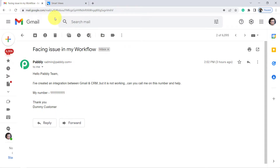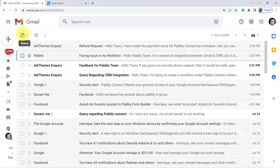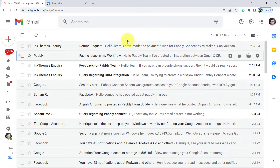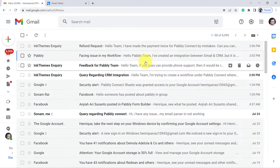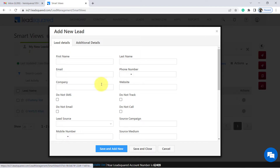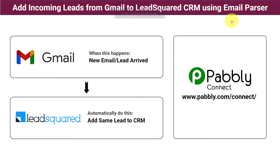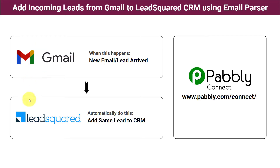So what if I tell you that I can entirely automate this process? Yes — every time I receive a new query, a new email, it will be filtered automatically among all these emails and the details will be added to my LeadSquared CRM automatically. Whenever a new email or a new lead arrives to my Gmail account, it will be filtered out automatically and added to the CRM using an automation and integration software called Pabbly Connect, which will integrate Gmail and LeadSquared.